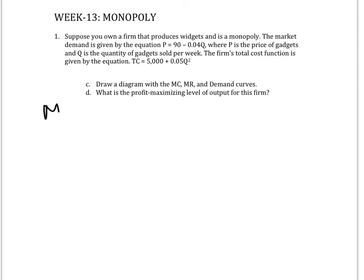So now we already found the marginal revenue for the firm, it's 90 minus 0.08Q, and we know that the firm is going to maximize profits when marginal revenue equals marginal cost.